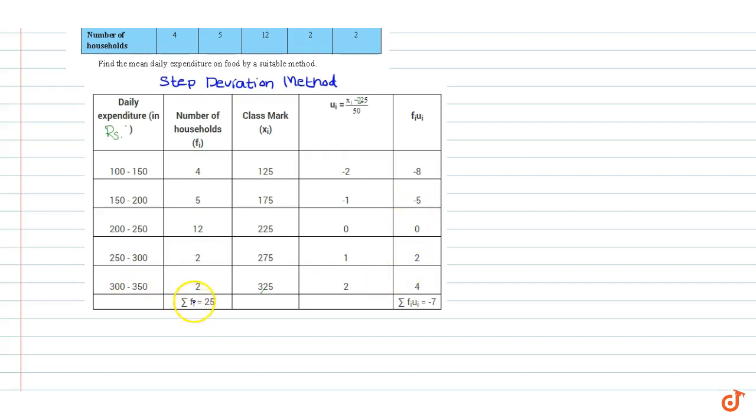Here we calculate the sum of all the frequencies in this column, that is sigma fi which is equal to 25. Here we calculate sum of fi ui in this column, that is sigma fi into ui is equal to minus 7.